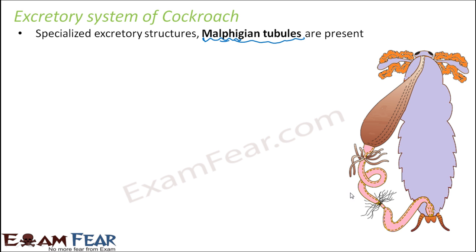While talking about the digestive system, I told you where the Malpighian tubules are present — at the junction of the midgut and hindgut. These are filament-like structures present in numbers of almost 100 to 150 filaments. They extract all the waste products from the hemolymph. Malpighian tubules in cockroach are analogous to kidneys in human beings, which are also the main excretory organs.